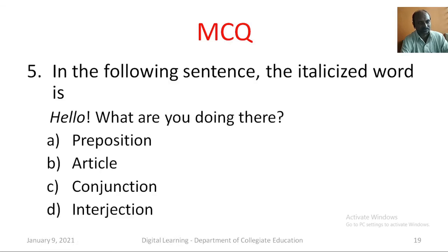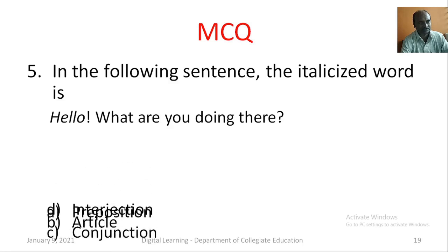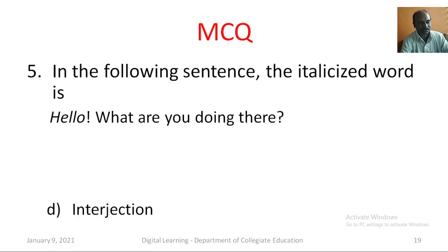Question number five: in the following sentence, the italicized word is dash. The sentence is: Hello! What are you doing there? Option A: preposition. Option B: article. Option C: conjunction. Option D: interjection. Yes, you are correct. The correct answer is interjection.